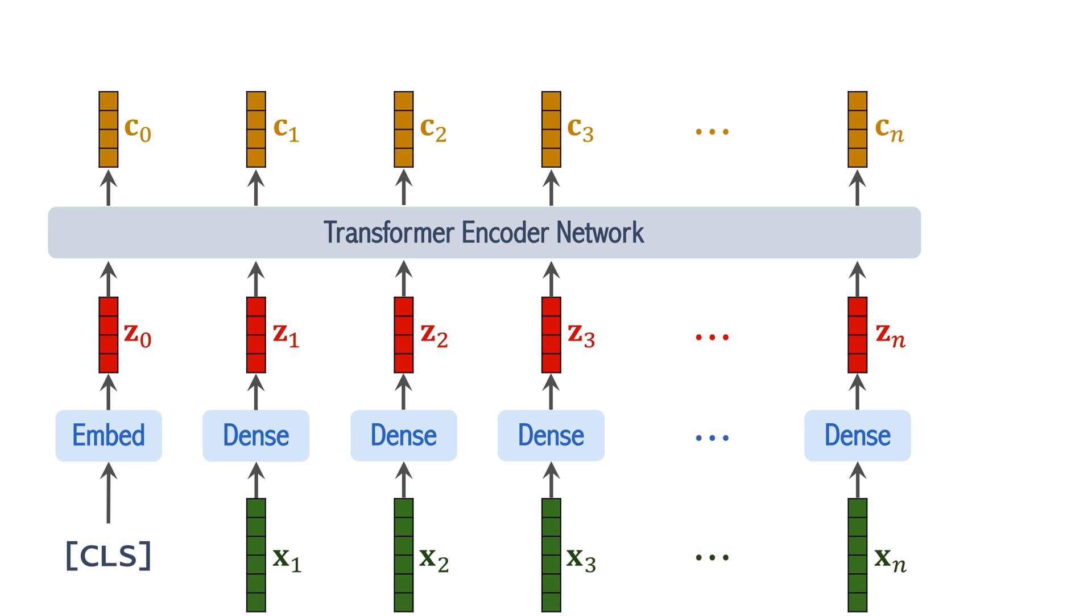Vectors c0 to cn are the outputs of transformer. To perform the classification task, we don't need vectors c1 to cn. Simply ignore them. What we need is vector c0. It is the feature vector extracted from the image. The classification is based on c0.